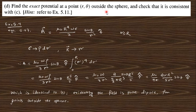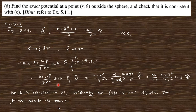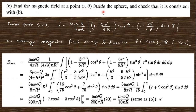Find the exact potential at (r, θ) outside the sphere and check consistency. From example 5.11, equation 5.67, the vector potential is written down. Changing σ to ρ and R accordingly, then integrating gives the expression, which is identical to the dipole result — confirming a pure dipole field outside the sphere. For the magnetic field inside at (r, θ), from problem 5.29 the field is given. Taking the r-hat component (cos θ) and θ-hat component (sin θ) and substituting, you get the final expression, consistent with part (b).